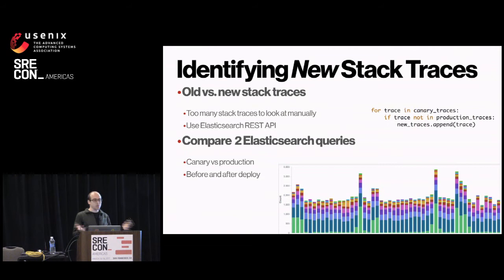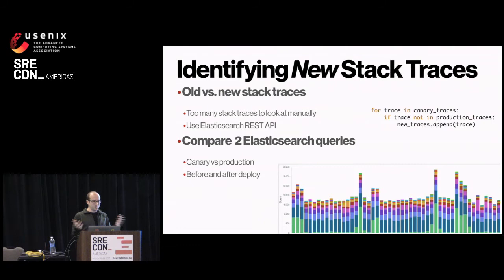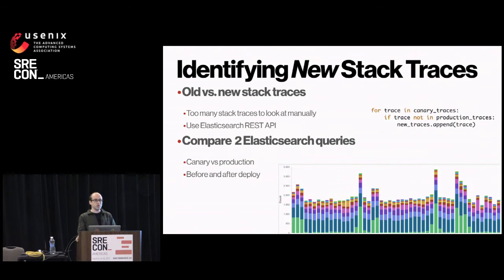We actually have to distinguish between new and old stack traces. To do this we use Elasticsearch's REST API, which is really powerful and much easier for automation than the web UI. We decided to compare two different systems: maybe we're doing a canary deploy first — we compare all stack traces on canary versus production. Then after the deploy, we look at before versus after, comparing now versus a couple hours before, to see if there are any new stack traces we didn't see before.